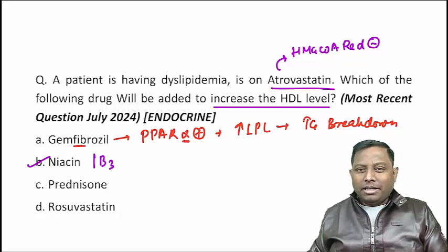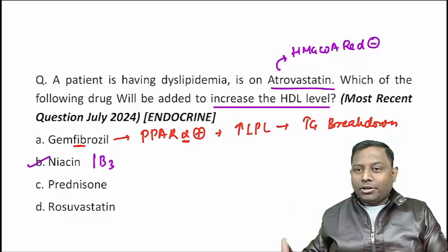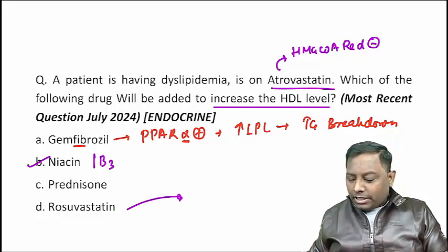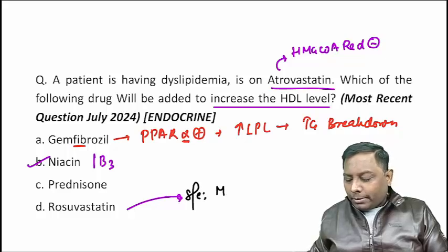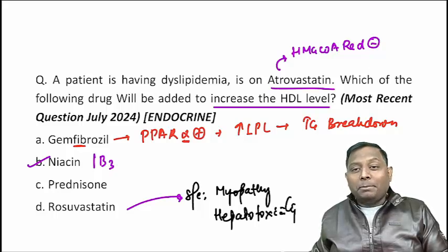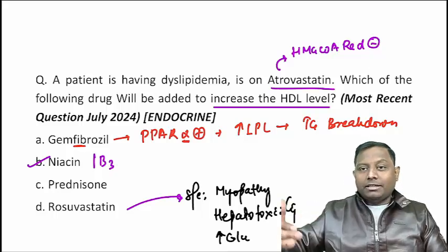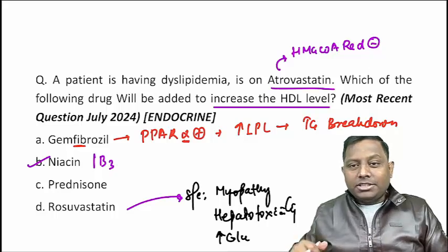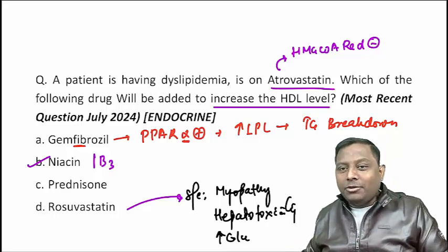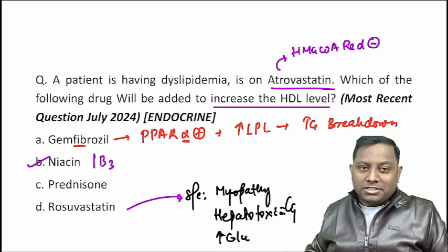Prednisolone (a steroid) will not increase HDL. Rosuvastatin is another example of a statin — an HMG-CoA reductase inhibitor. Important side effects of statins include myopathy, hepatotoxicity, and hyperglycemia. Pre-diabetic patients may be converted to diabetes with this drug; there are multiple theories behind this, discussed in regular classes.